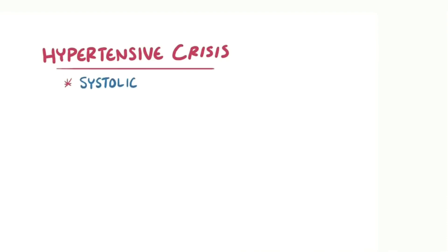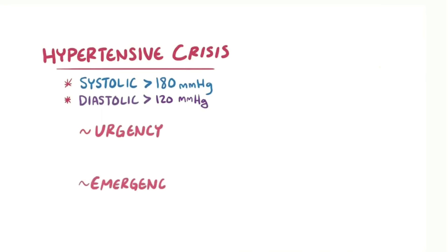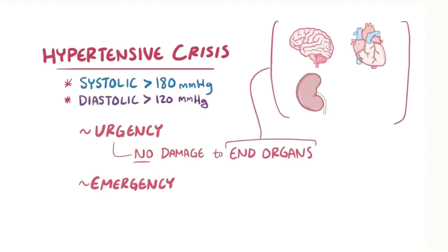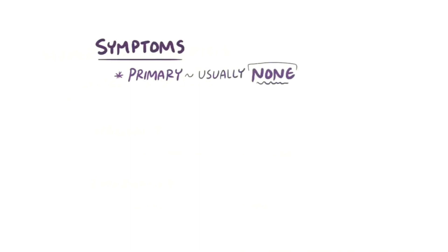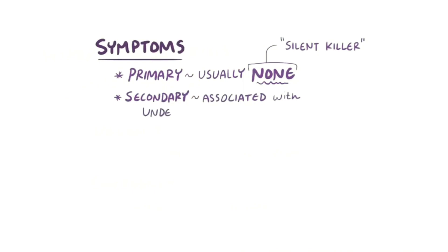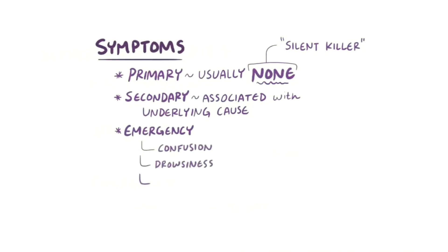If blood pressure gets very high very fast, it's referred to as a hypertensive crisis, involving systolic pressure greater than 180 mmHg or diastolic pressure greater than 120 mmHg. This is further divided into hypertensive urgency, where there is no yet damage to end organs like the brain, kidneys, heart, and lungs, and hypertensive emergency, where damage to end organs is evident. Primary hypertension usually has no symptoms — which is why it's called a silent killer — while hypertensive emergency may involve confusion, drowsiness, chest pain, and breathlessness.